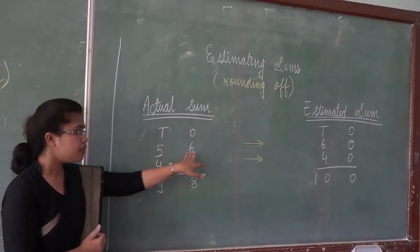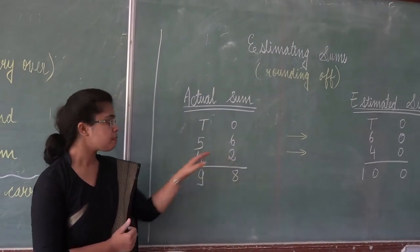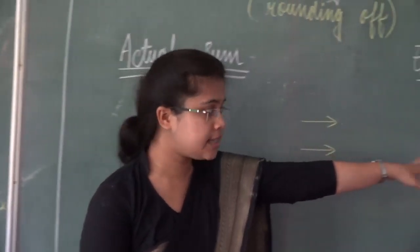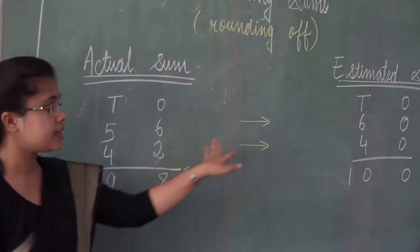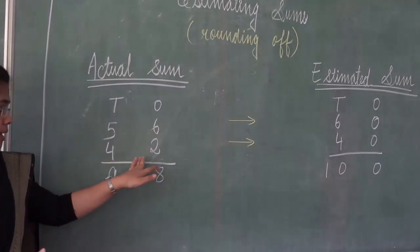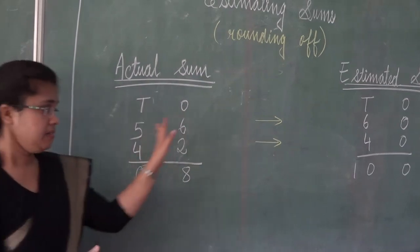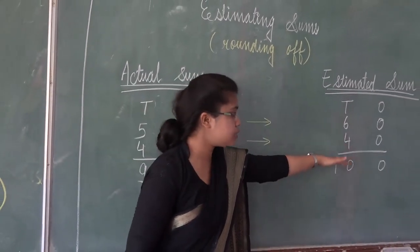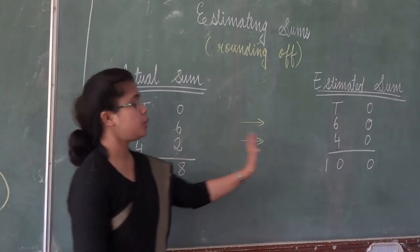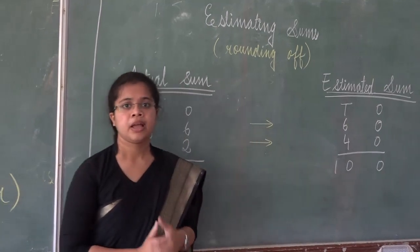So the actual sum is 56 and we need to add in 42. So 56, nearest tens is 60. 42, nearest tens is 40. The sum of these two numbers is 98 and the estimated sum is 100. But even if we add this and then we want to estimate then also the answer is 100.